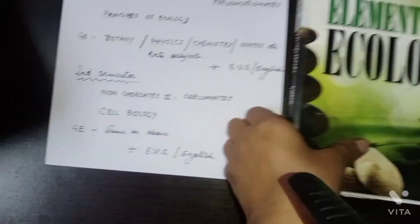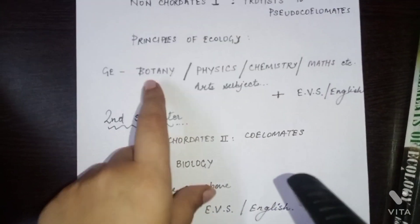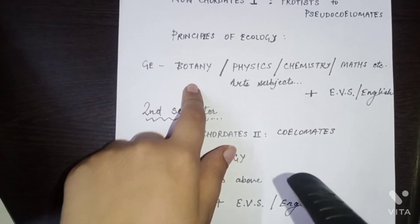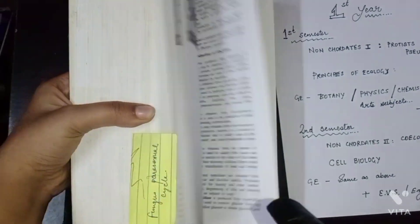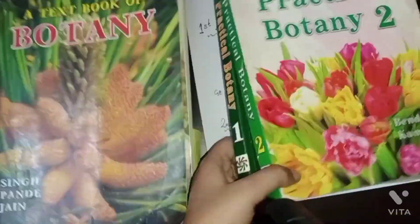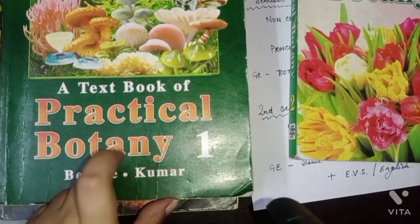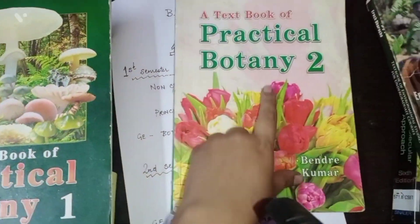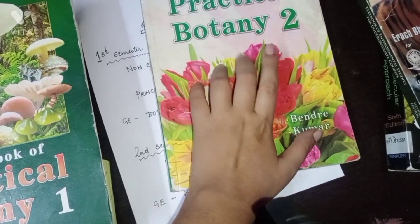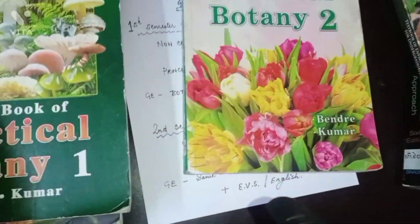Next is the GE subject, which anyone can opt into. Mainly what I did was Botany in the first semester. For Botany theory in the first semester, Singh, Pandey and Jain was recommended. For practicals, Bendre and Kumar is the book. For the first semester, Bendre and Kumar Practical Part 1; and for the second semester, if you've opted for Botany, then Part 2 — same Bendre and Kumar edition. The edition is mainly as per the syllabus given.